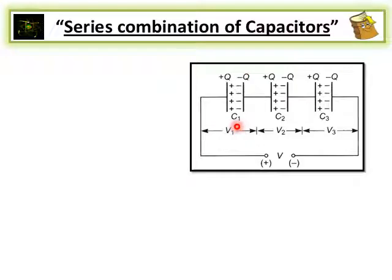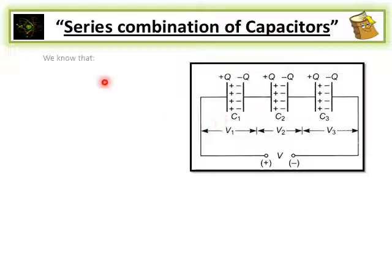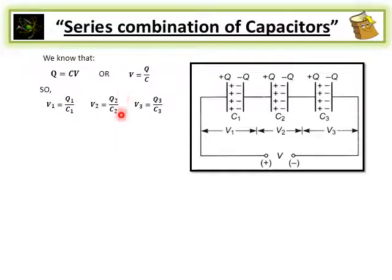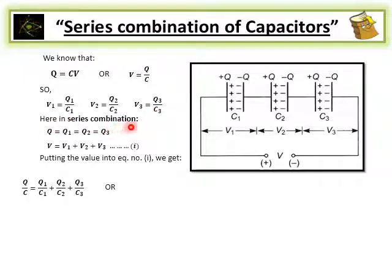We have three capacitors with capacitances C1, C2, and C3 connected with a battery of voltage V. The potential differences on the capacitors are V1, V2, and V3. Using Q = CV, we get V1 = Q1/C1, V2 = Q2/C2, V3 = Q3/C3. In series combination, the charge is the same on each capacitor: Q1 = Q2 = Q3 = Q. But the potential difference on each capacitor is different.